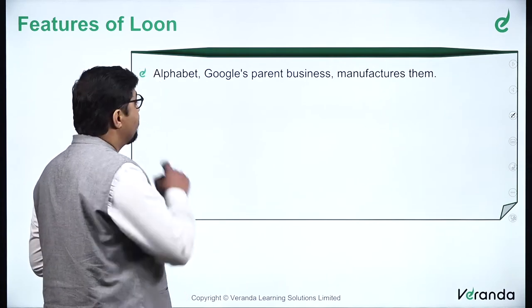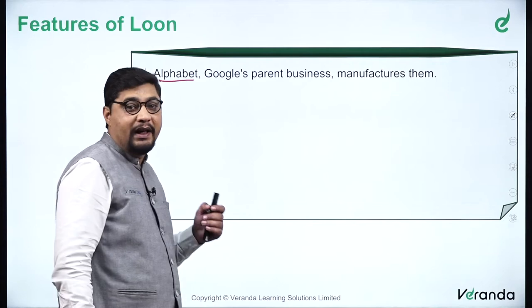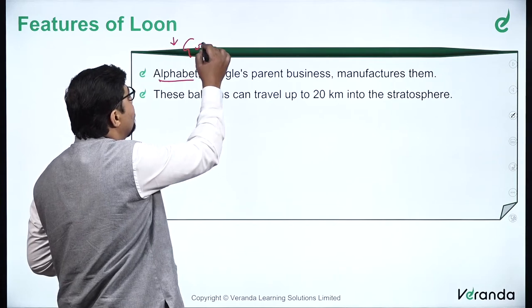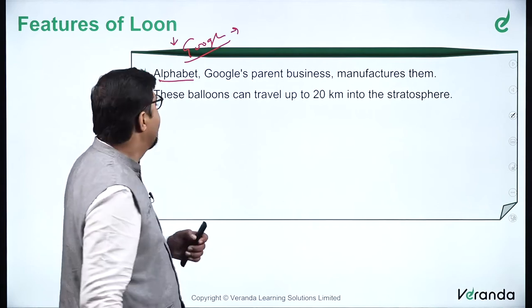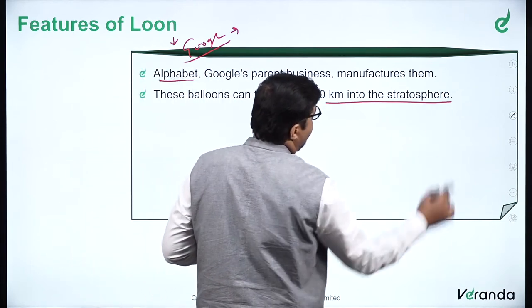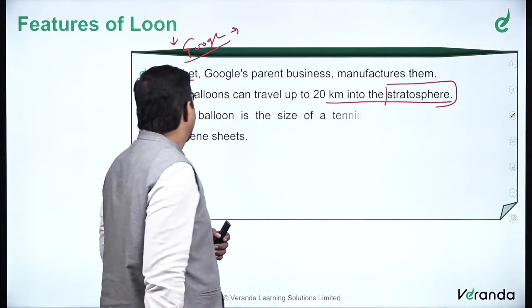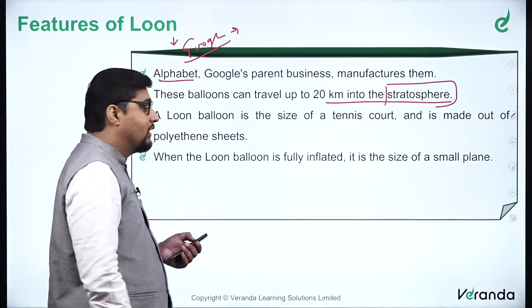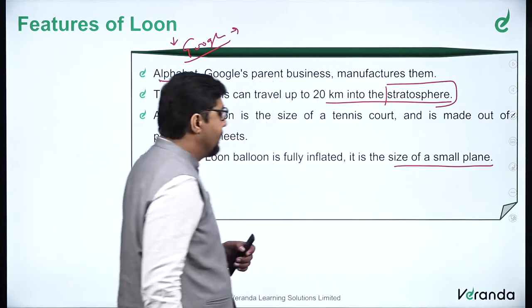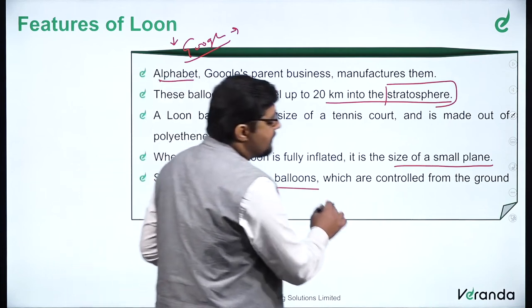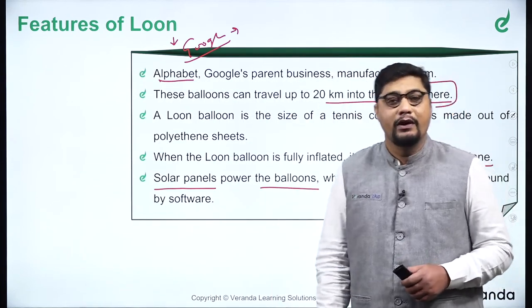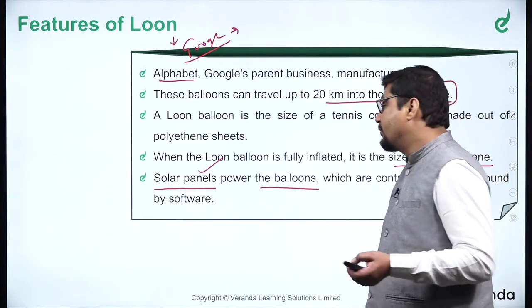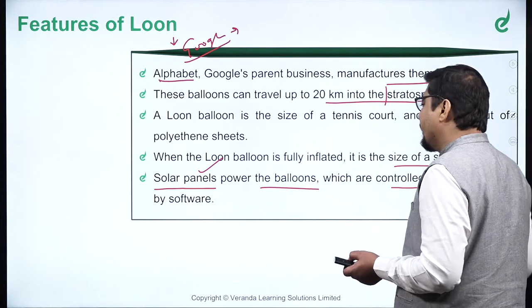Now let's study the features of the Loon. Alphabet, which is Google's parent company, manufactures these balloons. Project Loon is of Google, in the name of its parent company Alphabet. These balloons can travel up to 20 kilometers in the stratosphere — very important for the prelims point of view. A Loon balloon is the size of a tennis court and is made of polyethylene sheets, that is common plastic. When fully inflated, it is the size of a small plane. Solar panels power the balloons, which are controlled from the ground by software.